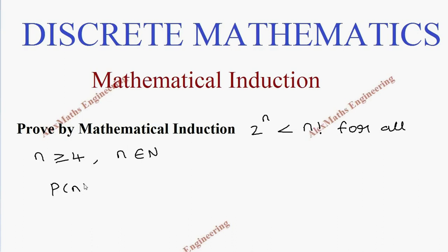Let's take this expression as P(n), which is 2^n less than n factorial, where n is greater than or equal to 4. Since the first value is 4, we are going to find what is P(4).